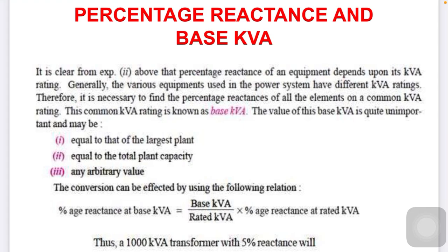Percentage reactance of equipment generally depends on the KVA rating — kilowatt ampere. Generally, various equipment used in the power system have different KVA ratings. So it is necessary to find the percentage reactance of all elements at a common KVA rating. This KVA rating is known as base KVA, and its value depends on three quantities.